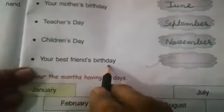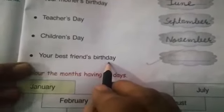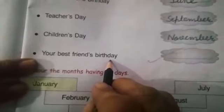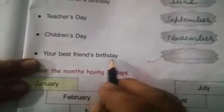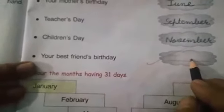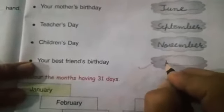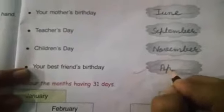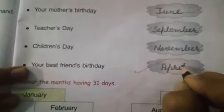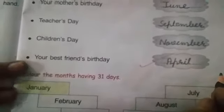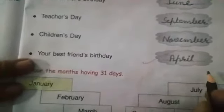Your best friend's birthday — you will write your best friend's birthday here. I am writing April. You will write the month of your best friend's birth.